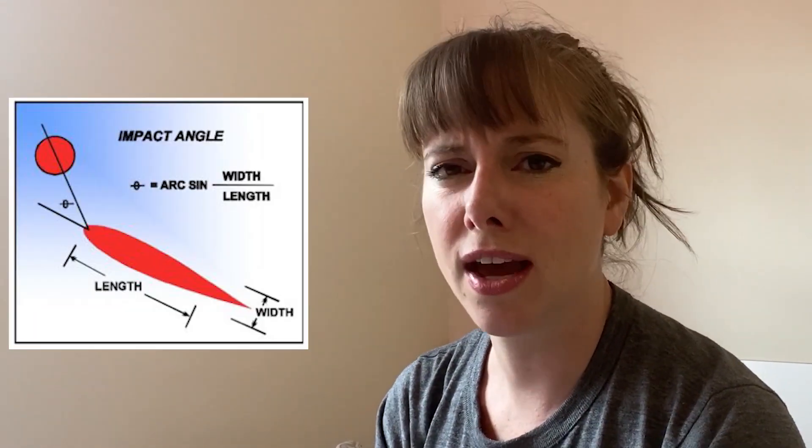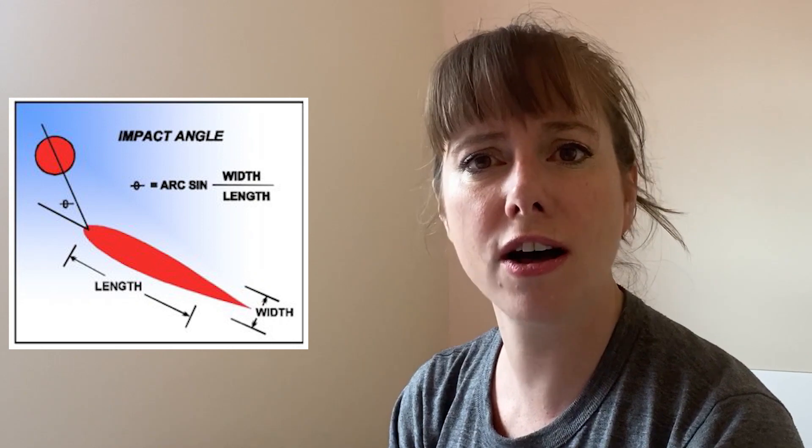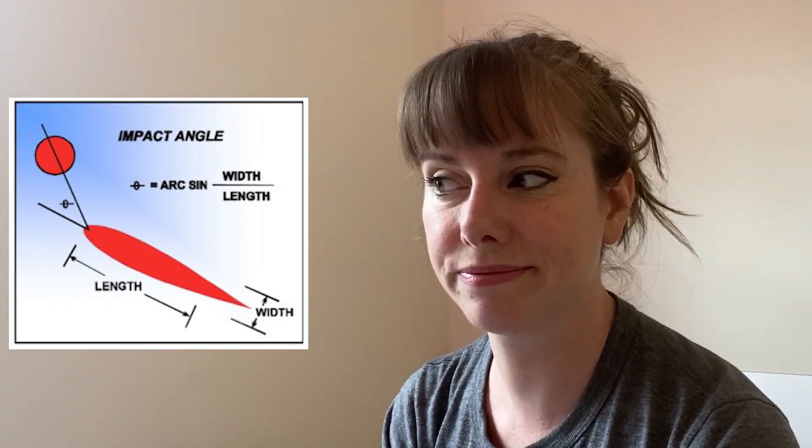The shape of the stain changes depending on the angle of impact, velocity, distance travelled and type of surface impacted. From a great height, the drop will have a crown effect. From an angle, the leading edge will be round and the far side irregular, giving us a direction. By measuring the width and length of the stain, the angle of impact can be calculated. The angle of impact is equal to the arcsin of the drop's width divided by its length. Basically, by following the angle back to the origin, we can determine the position of the victim and assailant.